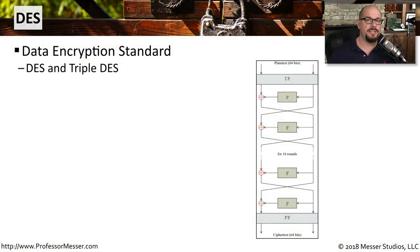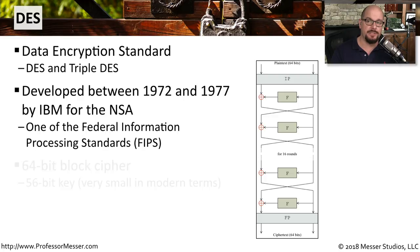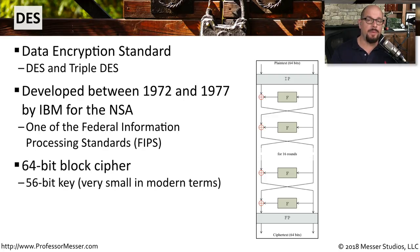DES, or the Data Encryption Standard, was one of the most popular symmetric encryption algorithms in use. The United States National Security Agency had IBM create this encryption standard between 1972 and 1977, and it was part of FIPS, or the Federal Information Processing Standards. DES used a 64-bit block cipher, so it encrypted 64 bits of data at a time, and it used a 56-bit key to encrypt this information.